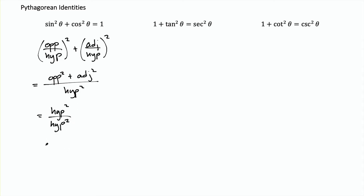The hypotenuse squared divided by hypotenuse squared equals 1, confirming that sin²θ + cos²θ = 1. The proofs of the other two Pythagorean identities follow by dividing both sides of this equation by cos²θ to get the second identity, and dividing both sides by sin²θ to get the third.